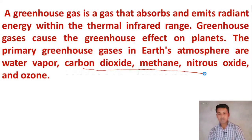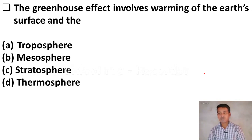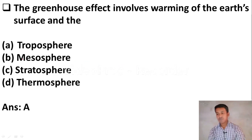Next question: the greenhouse effect involves warming of the Earth's surface and which layer? Option A, troposphere. Option B, mesosphere. Option C, stratosphere. Option D, thermosphere. The greenhouse effect involves warming of the Earth's surface and the troposphere. So Option A, troposphere, is the right answer.